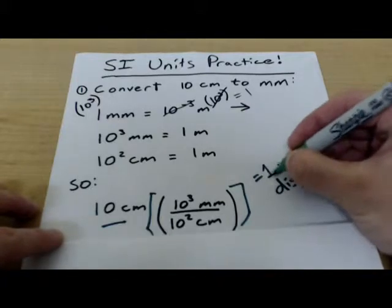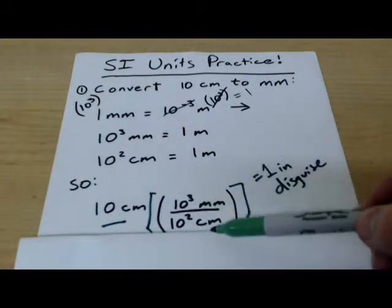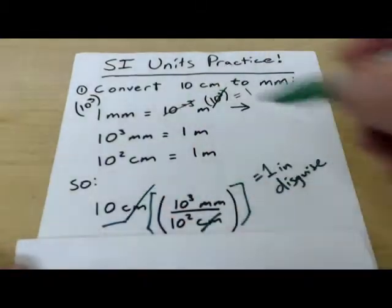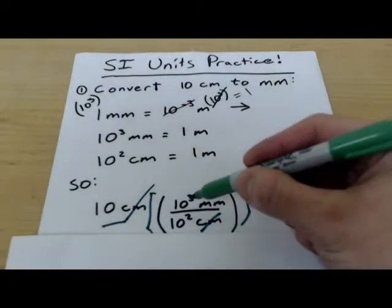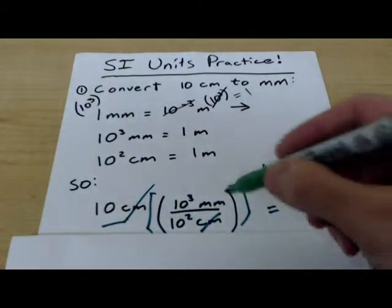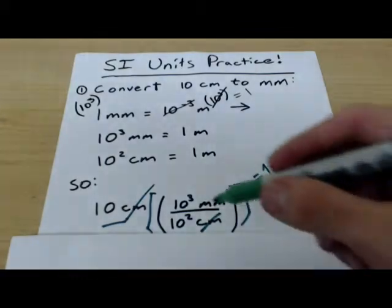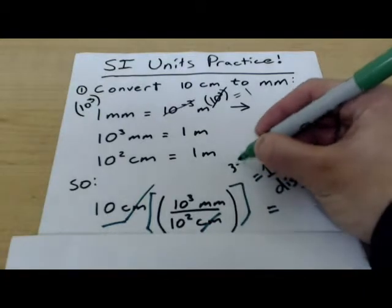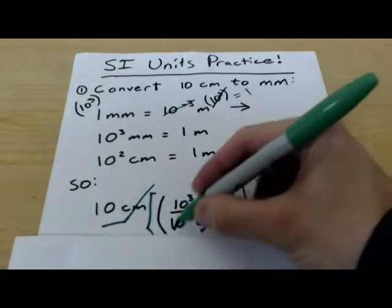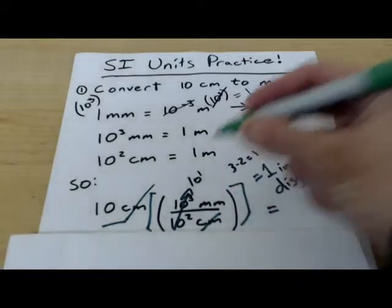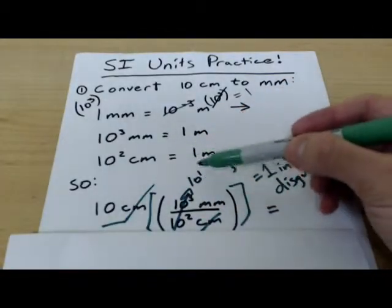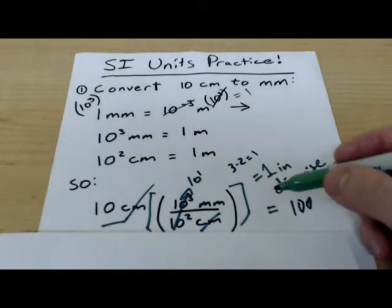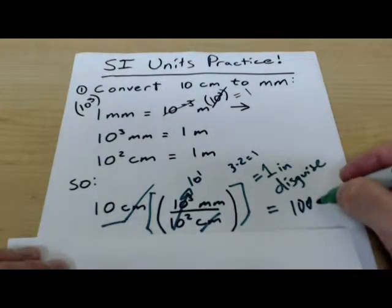Because it doesn't look like one, but these are the exact same value. And so it's equal to one. So the centimeters cancel out. So now we just have ten to the three divided by ten to the two. And when we're dividing the same base with different exponents, we can simply subtract. So we go three minus two equals one. So this whole thing just equals ten to the one. And now we have ten times ten to the one, or simply ten. And we get a hundred. The units we have left are millimeters. So the answer is a hundred millimeters.